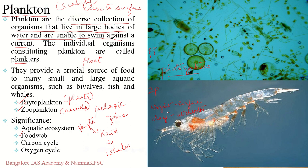One way to tell if a body of water has a large plankton population is to look at its clarity — very clear water means less plankton population.